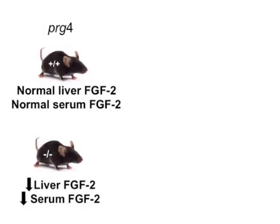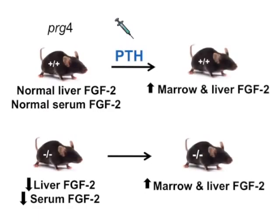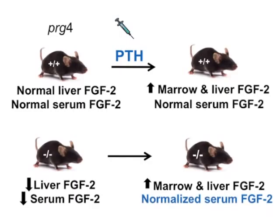Valuable information was obtained relative to a role for FGF-2. Adult null mice had lower FGF-2 gene expression in the liver and protein levels in the serum. Interestingly, a single PTH injection increased marrow and liver FGF-2 at one hour, and six weeks of treatment normalized serum FGF-2 levels in null mice. This data suggests FGF-2 is a candidate regulator of proteoglycan-4 and that the liver may be an important target organ.